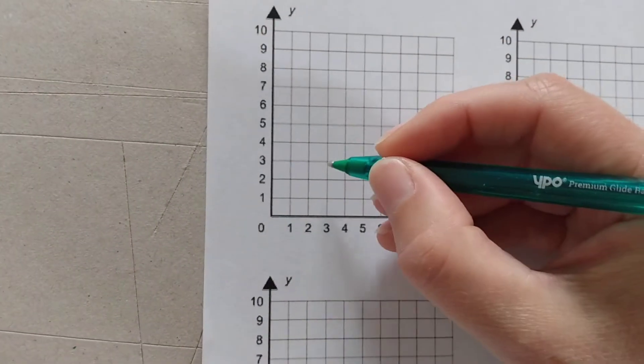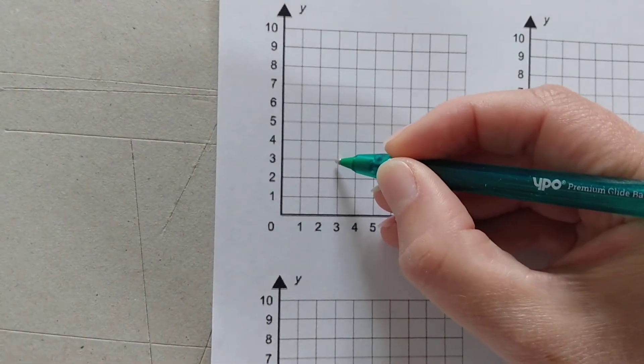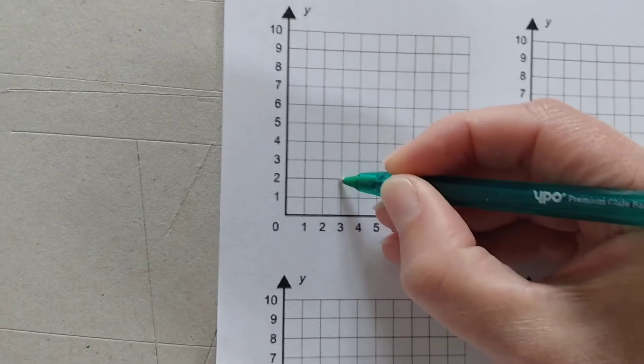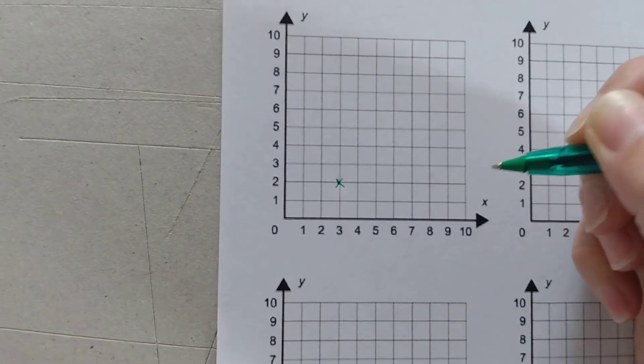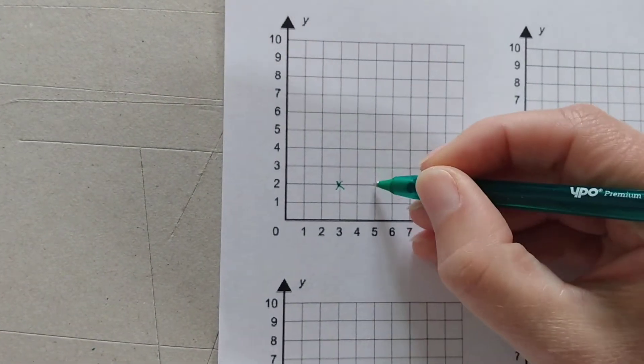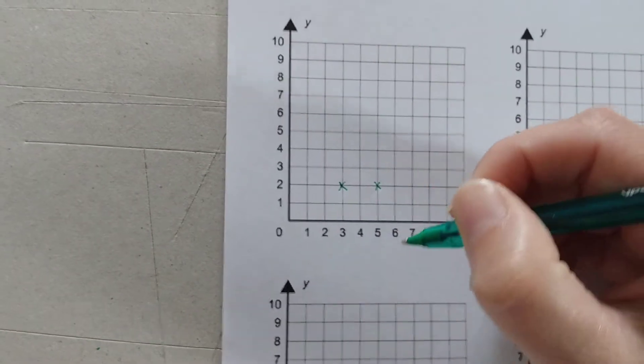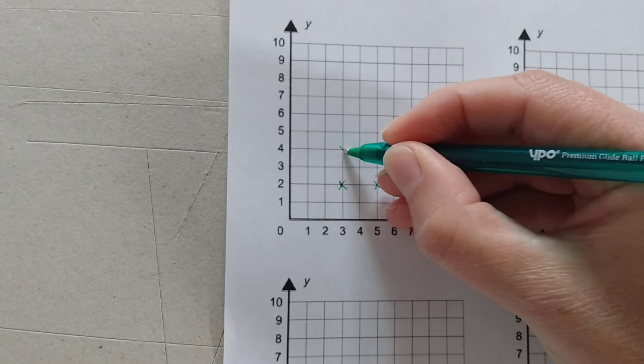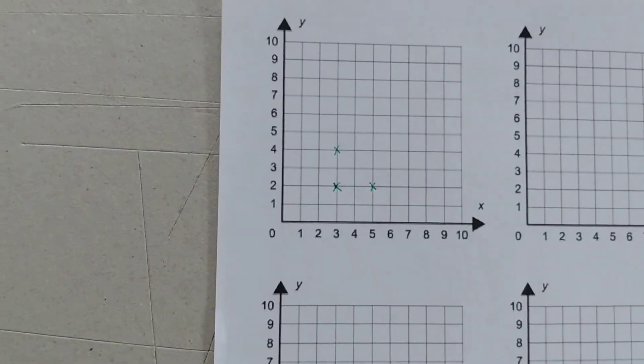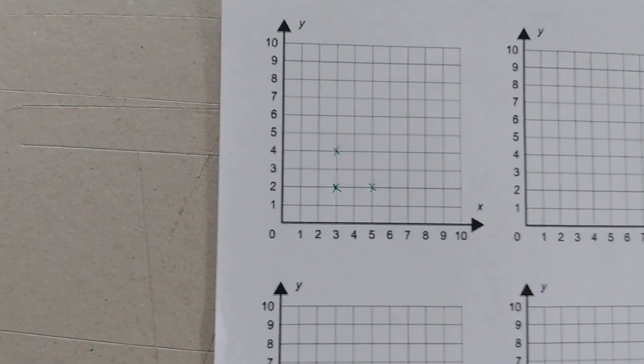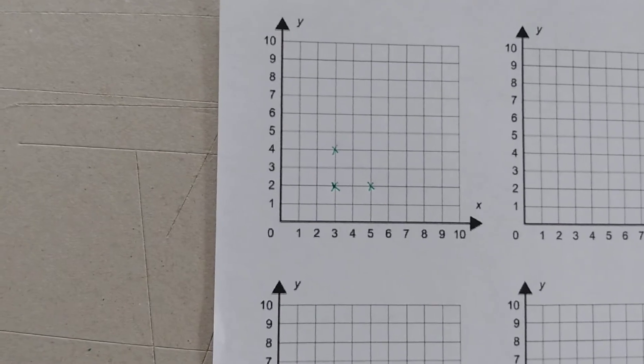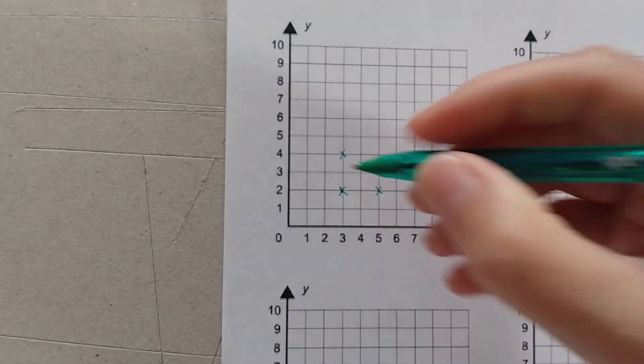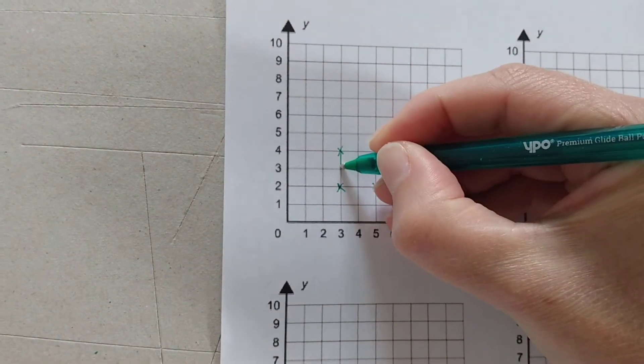For example, if I had the coordinate 3, 2 and 5, 2 and 3, 4, what coordinate would I need to plot to complete a square shape? Well, let's try joining the ones we've got together first.